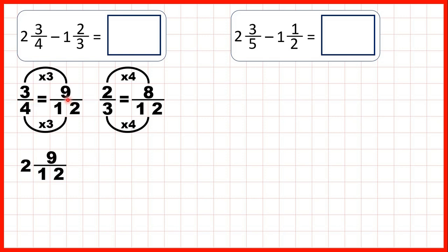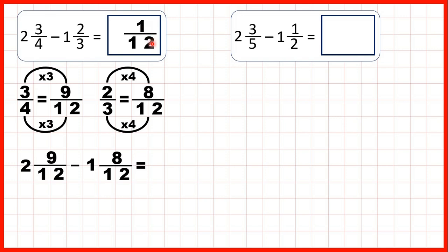9 twelfths is the same size as 3 quarters. We're subtracting 1 and 2 thirds, but we can change that to 1 and 8 twelfths, because 8 twelfths is equivalent to 2 thirds. Now we start by seeing if we can subtract our fractions: 9 twelfths minus 8 twelfths is 1 twelfth, because the denominator stays the same and 9 minus 8 is 1.